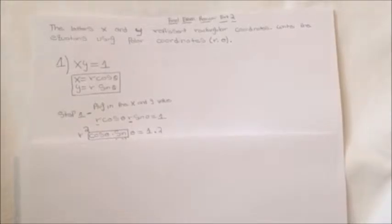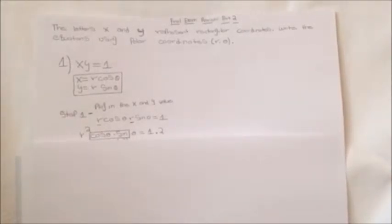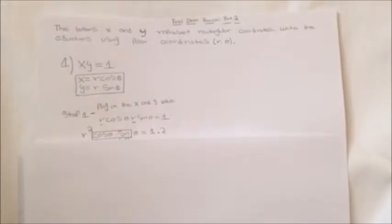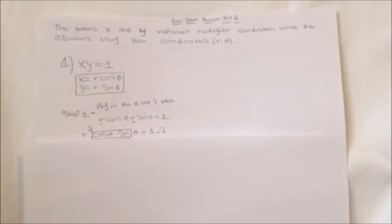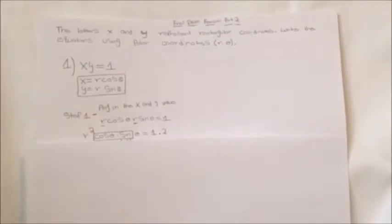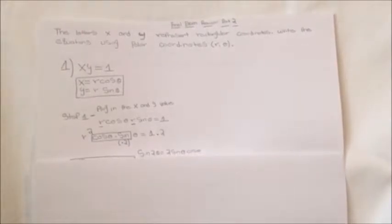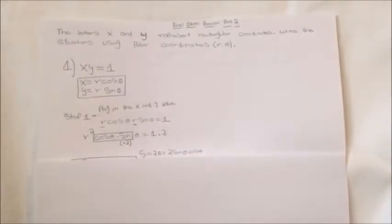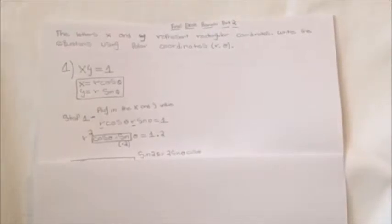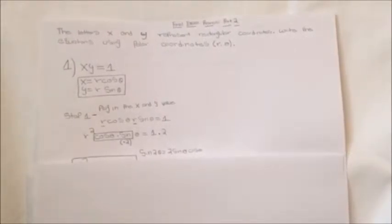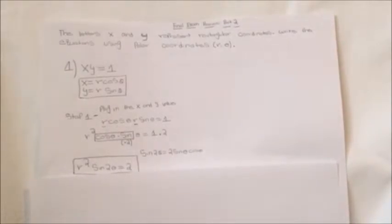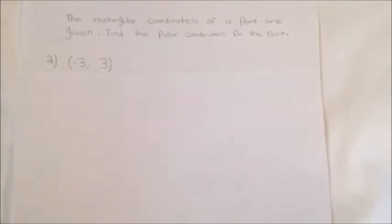Since we have two r's, it's going to be r squared cosine theta times sine theta equals 1. We multiply both sides by 2 because we want sine 2 theta, and we know that 2 sine theta times cosine theta equals sine 2 theta. So our final answer is r squared sine 2 theta equals 2.